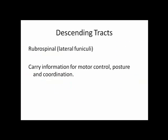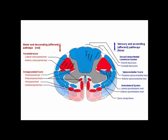The other descending tracts are the rubrospinals, located in the lateral funiculus. These carry information for motor control, posture, and coordination — more unconscious types of motor information, whereas the corticospinals carry more conscious motor information. Remember the spinal cord is symmetric, so everything you see on one side you'll see on the other.